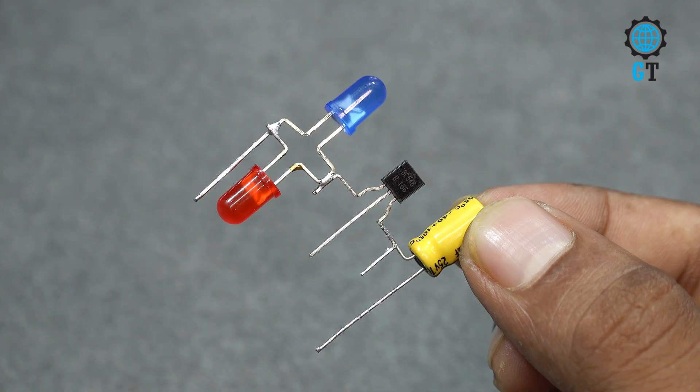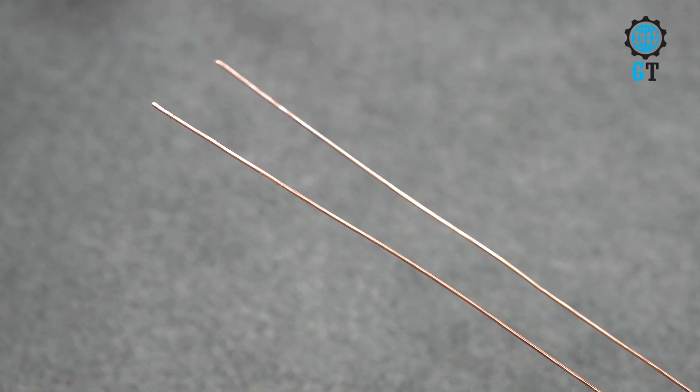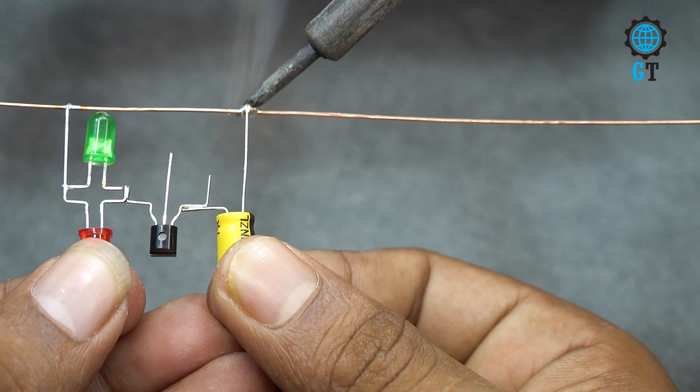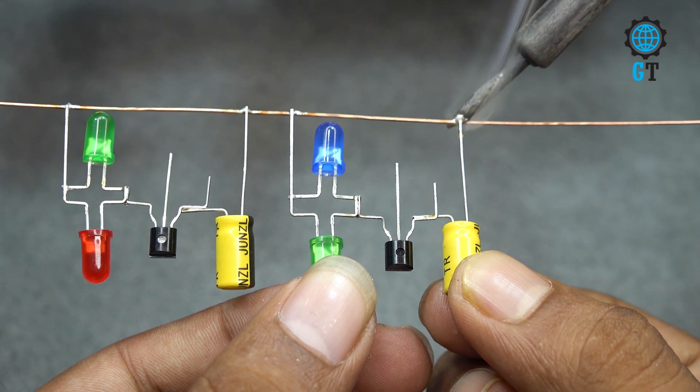Review the circuit connection. Following the same method, we make 3 more circuits. Now we connect all LED and capacitor negative legs with copper wire.